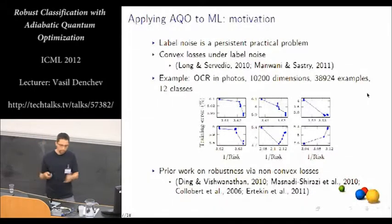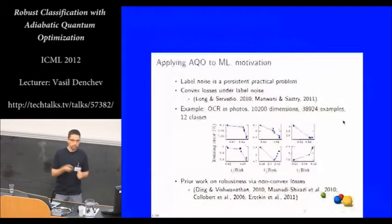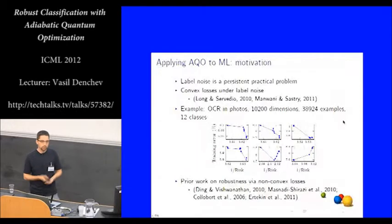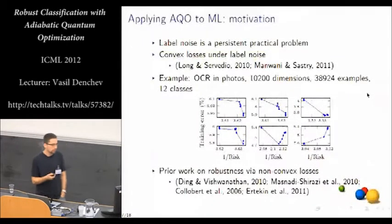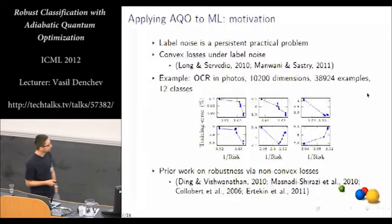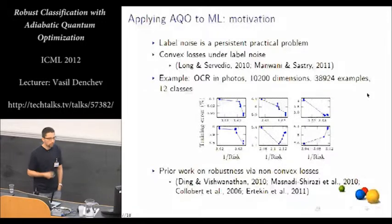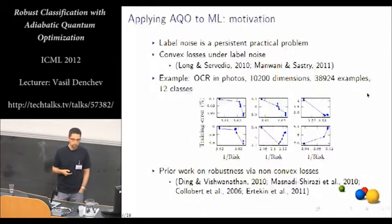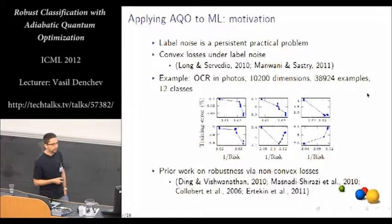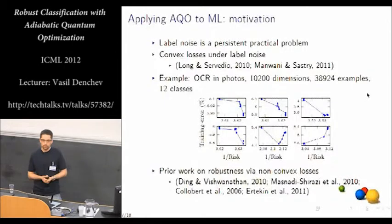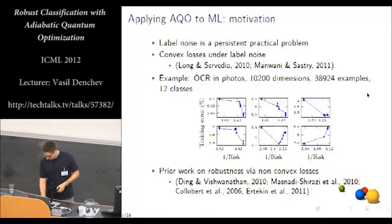And what happens is that the noisy data points are pulling the decision hyperplane towards themselves so that the total empirical risk is minimized. And yes, that creates a solution that is not actually the best decision hyperplane that we might be looking for. So this is how convex losses fail on noisy data. There has been prior work on robustness with non-convex losses. The difference between these papers and our work is that they have all resorted to convex optimization to solve the non-convex problems. And it's easy to see that this is not the right way to do it. Because the convex optimization methods would just get stuck in the local minimum and would have no mechanism of escaping it. Whereas here, we are actually trying to solve the non-convex problem with non-convex optimization.